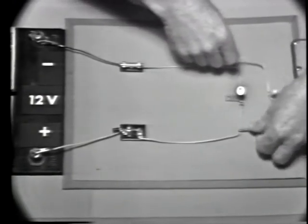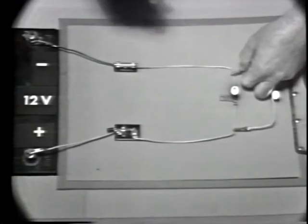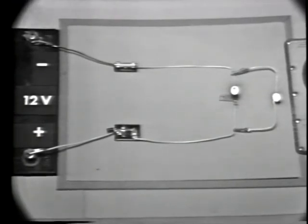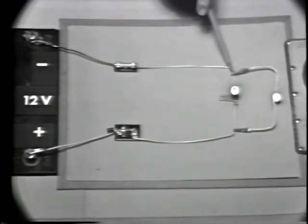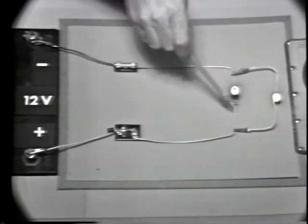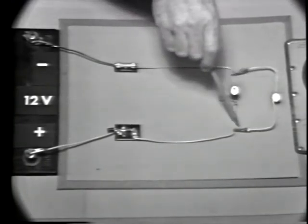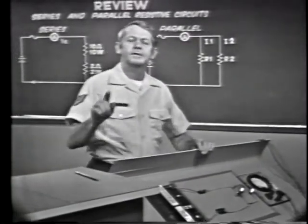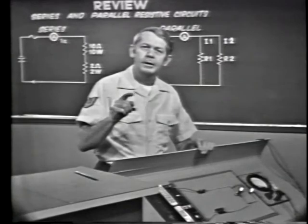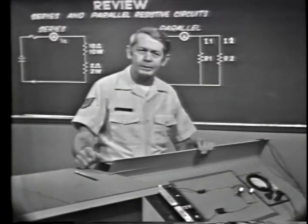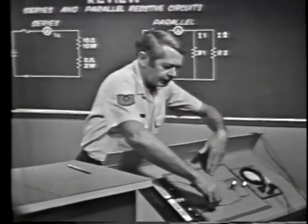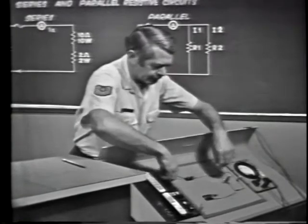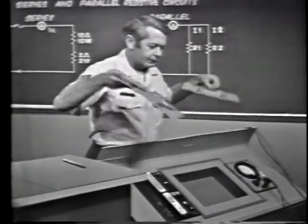If another bulb is added out here, we create an additional current path and change from a series circuit to a parallel circuit. Current now divides at this point, some going through this bulb and some through this bulb. Remember: a series circuit has only one path for current; a parallel circuit has more than one path.